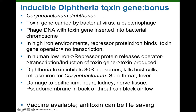However, when Corynebacterium diphtheriae moves into humans, humans have evolved iron-binding proteins so that bacteria can't access our iron. So in a human, there's going to be low, free, available iron. Because of that, the repressor protein will no longer have iron bound to it, changes shape, is no longer active, and falls off the operator. That permits RNA polymerase to transcribe the diphtheria toxin gene, and then the mRNA is translated into diphtheria toxin. Diphtheria toxin is a protein toxin that inhibits eukaryotic ribosomes in our cytoplasm, killing our cells.